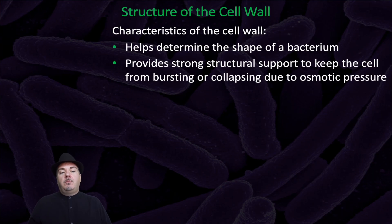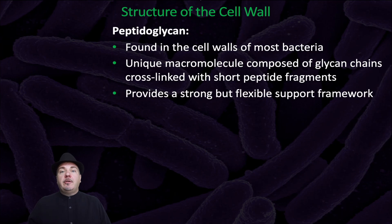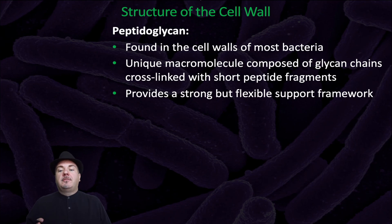In regards to the cell wall, it helps to determine the shape of the bacteria and it provides strong structural support to keep the cell from bursting open or collapsing due to osmotic pressure or water pressure due to osmosis. In bacteria, we find peptidoglycan, which is found in the cell walls of most bacteria. It's a unique macromolecule composed of glycan chains cross-linked with short peptide fragments. It provides a strong but flexible support framework.